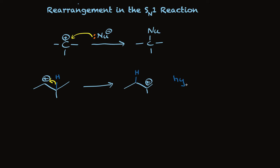Hydride because it's hydrogen with a pair of electrons. If this carbon had three alkyl groups on it, it would be an alkyl group that migrates rather than a hydride.